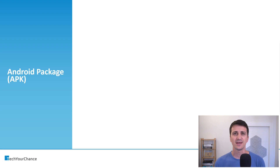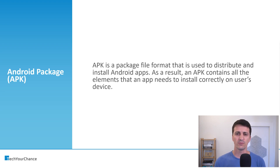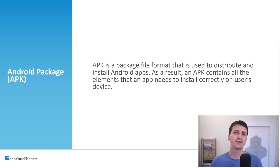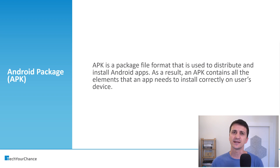The next type is APK files. APK is a package file format used to distribute and install Android applications — it's something special to the Android ecosystem. As a result, APK contains all the elements that an app needs to install correctly on users' devices: manifests, images, and compiled classes — which inside APKs are called DEX files, not class files. Everything goes inside the APK because it should be a standalone, self-sufficient artifact.